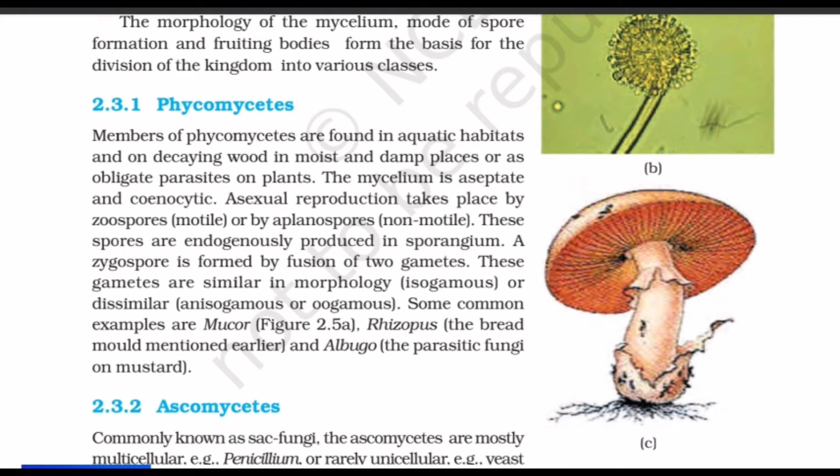The mycelium is aseptate and coenocytic. Asexual reproduction takes place by zoospores (motile) or aplanospores (non-motile). These spores are endogenously produced in a sporangium. A zygospore is formed by fusion of two gametes — these gametes can be similar in morphology (isogamous) or dissimilar (anisogamous or oogamous). Common examples are Mucor, Rhizopus (the bread mould), and Albugo (the parasitic fungus on mustard).